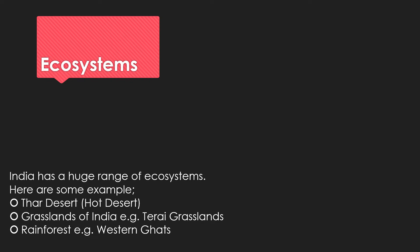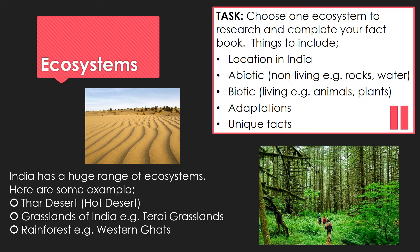Similar to climate, ecosystems was quite tricky to decide what to include. So instead I've given you three suggestions to explore: a desert, grasslands, and a rainforest. Given the varying climate, it makes sense that there are different ecosystems too — plants need different circumstances to thrive and animals need different habitats. For this task, consider five ideas for your chosen ecosystem: where is it located in India, what are the abiotic and biotic elements, what are the living and non-living things, are there any adaptations plants or animals have made, and are there any unique or interesting facts? Pause the video and research one of those three ecosystems.